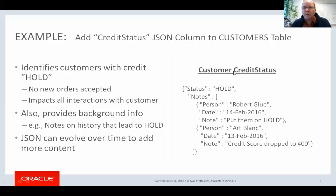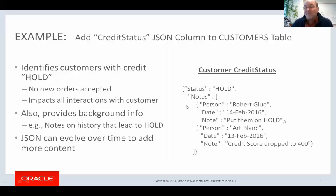For example, I have here a customer credit status JSON document that shows the status at the top of the document. In this particular case, there is a hold. We have notes showing that on February 13th, Art Blanc put a note that the customer's credit score dropped to 400, and then the next day Robert Bloom decided to put them on hold because that's a low score. You can then add whatever additional information, and over time this will evolve. The key thing is that the development team can make changes to this JSON independently of everybody else without impacting anything else — the only thing that really impacts other people is the top-level name-value pair of the status: do they have a hold or not?